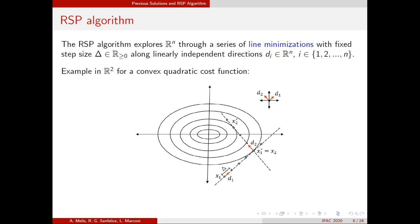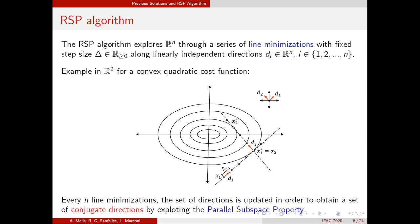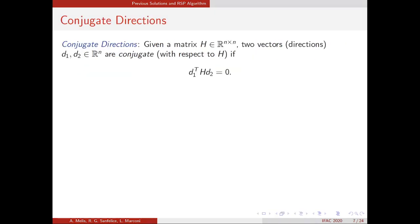Every n line minimizations in the RSP algorithm, the set of directions is updated to possibly obtain a set of conjugate directions. Conjugate directions are defined as follows: given a matrix H, we say that two directions are conjugate with respect to this matrix if the following relation is satisfied.